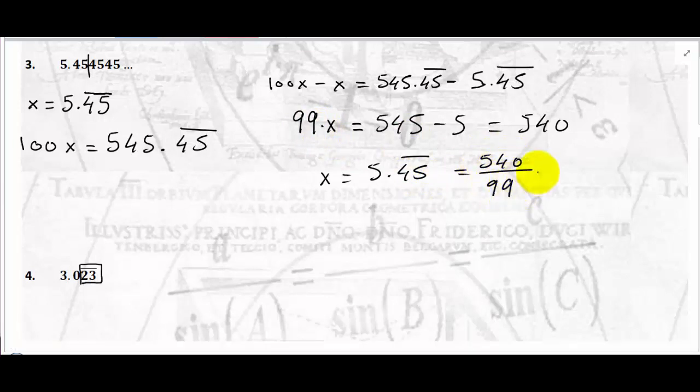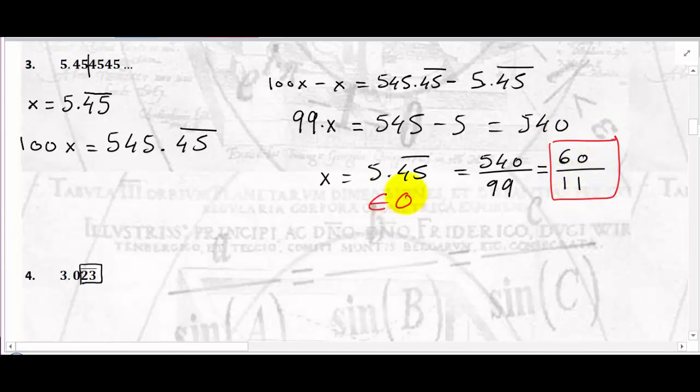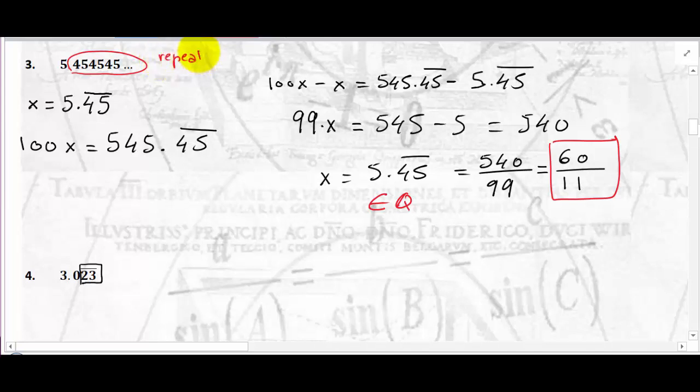So x equals 540 divided by 99. You can divide both sides by 9 — 9 is a common factor — and you get 60 divided by 11. Here is the ratio of two integers, and therefore 5.45 repeating is a rational number. A decimal number with an infinite number of digits and a repeating pattern is a rational number. It has to be a repeating pattern — that distinction is important.